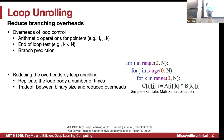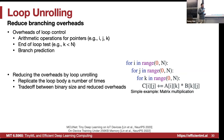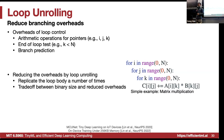With loop unrolling by 4, we reduce the number of pointer operations and loop tests to one quarter of the original. The trade-off is that the code size of the innermost loop becomes four times larger — previously one line, now four lines. Each instruction takes 4 bytes, and for a microcontroller with only 1 megabyte of flash to store everything including the code segment, large code size can be a significant issue.